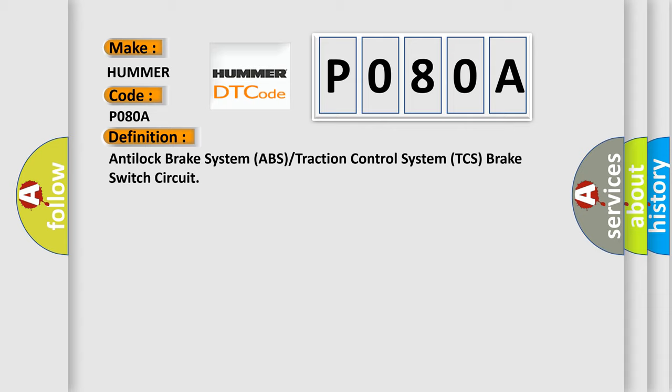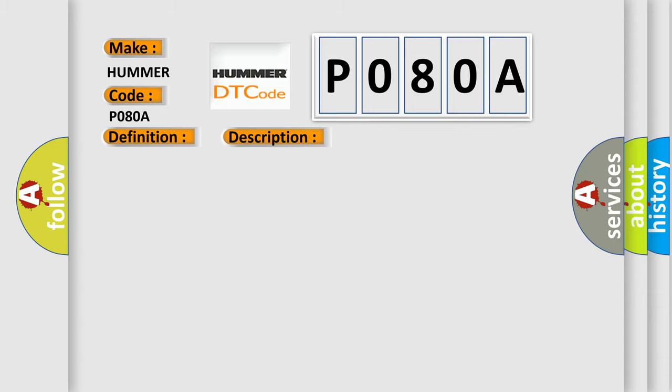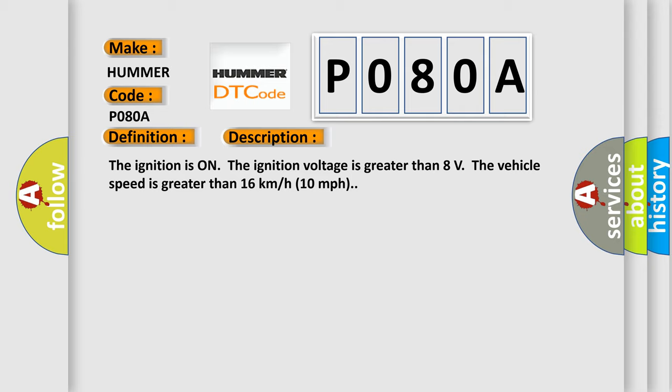And now this is a short description of this DTC code. The ignition is on, the ignition voltage is greater than 8 volts, and the vehicle speed is greater than 16 kilometers per hour or 10 miles per hour.